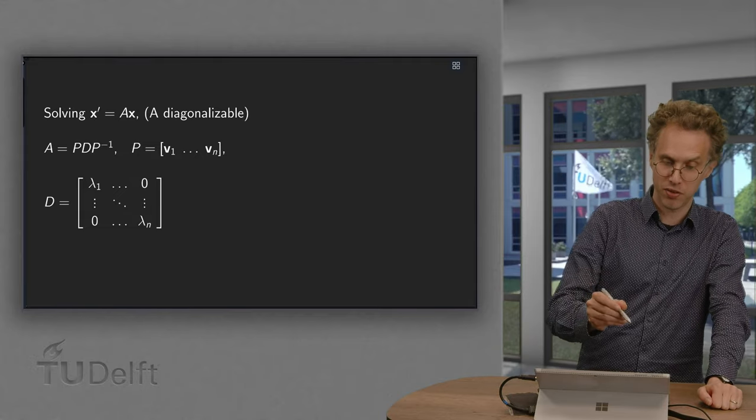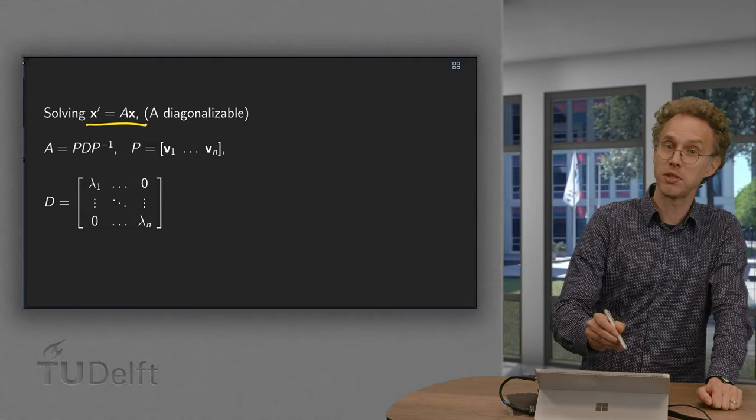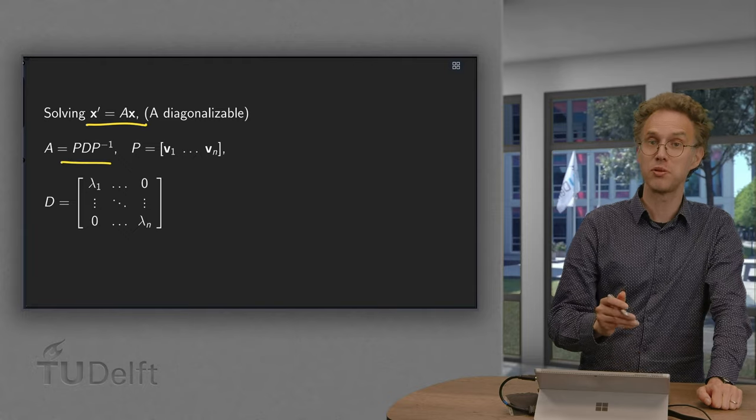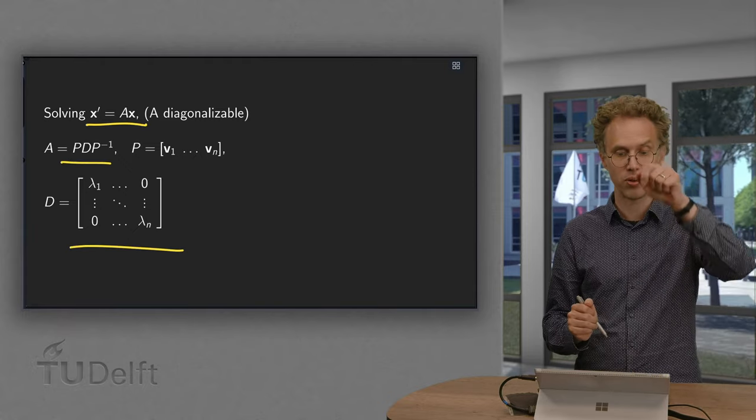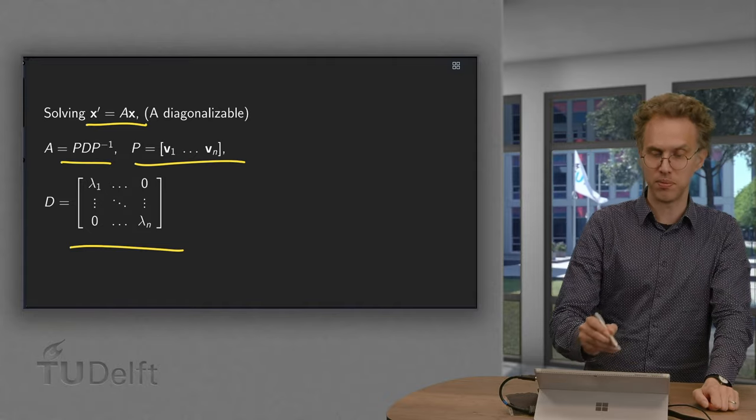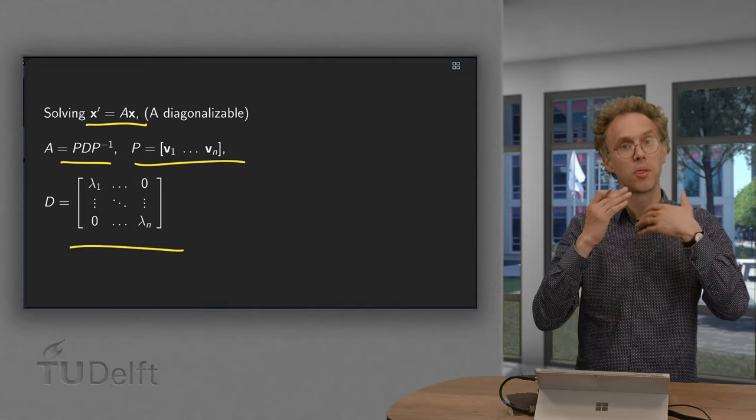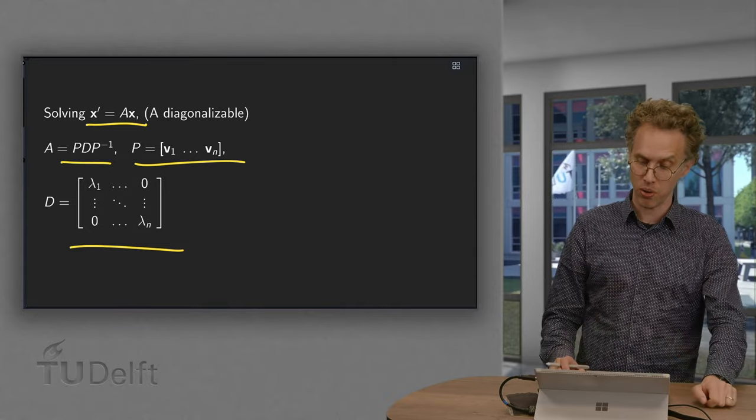So how do we do this? We have x prime equals a times x. A is diagonalizable, so a equals p times d times p inverse, where d is diagonal, lambda is on the diagonal, and p is a matrix with the eigenvectors, where the eigenvectors are all independent.